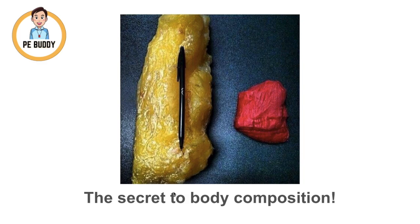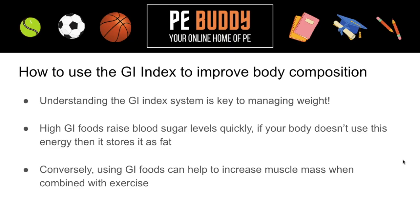And GI is the secret to body composition. High GI foods raise blood glucose levels really quickly. Now, if your body doesn't use this energy, then it is stored as fat. Conversely, if we want to increase our muscle mass, we can use different GI foods depending on our goals and whether we're combining that with exercise or not. So it's really important to understand this as it can really help our body composition.